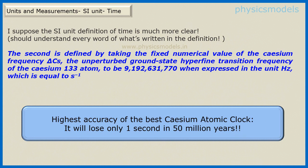Looking at the SI committee's full definition, we should now understand every word. The second is defined by taking the fixed numerical value of the cesium frequency delta-cs — the unperturbed ground state hyperfine transition frequency of the cesium-133 atom — to be 9,192,631,770 when expressed in the unit hertz, which equals one second. Incidentally, the highest accuracy of the best cesium atomic clocks is such that it will lose only one second in 50 million years.